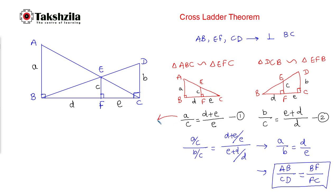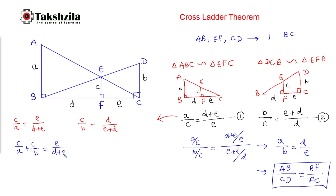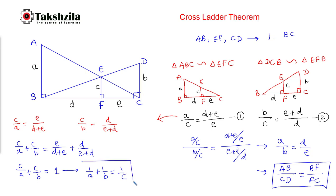Let's take the reciprocal of these two equations. The reciprocal of equation one is C divided by A equals E divided by D plus E. The reciprocal of equation two is C divided by B equals D divided by E plus D. Adding these two equations: C divided by A plus C divided by B equals E divided by D plus E plus D divided by E plus D, which simplifies to 1. Therefore, C divided by A plus C divided by B equals 1, or equivalently, 1 divided by A plus 1 divided by B equals 1 divided by C.